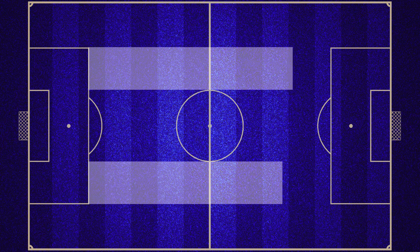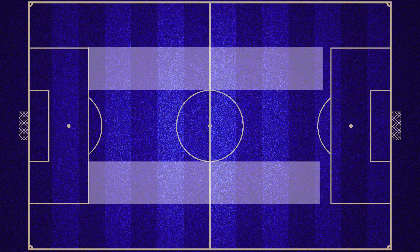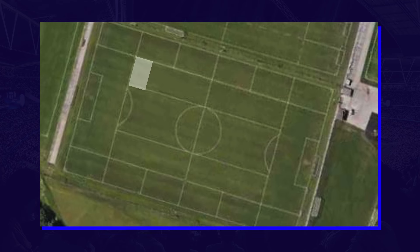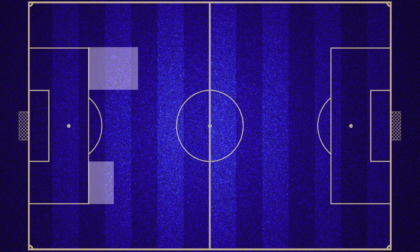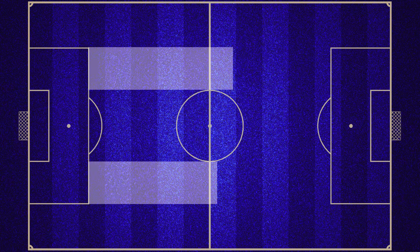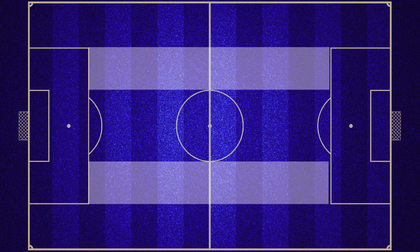The half-spaces are regions between the side channels and the central channel of the field. In the famous field division that became associated with Guardiola's style of play, we can see these regions highlighted very well. The half-spaces are especially important zones for the attack for several reasons, and it's about some of them that we'll talk about in this video.